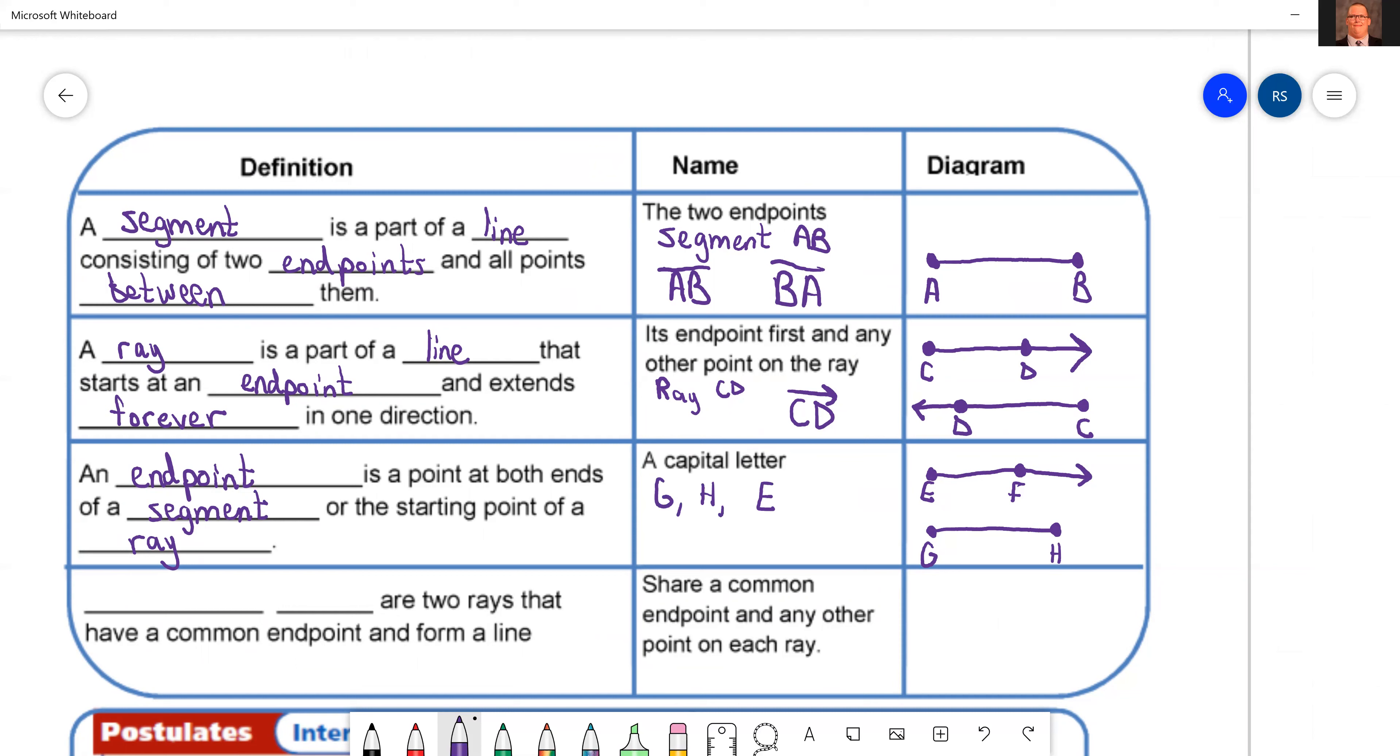Okay, and last but not least in this chart, the last definition is opposite rays. They are two rays that have a common endpoint. So they start in the same place and they form a line. So if they start in the same place but form a line, let's say this is point X. That means they've got to go in opposite directions. That's why they're called opposite rays.